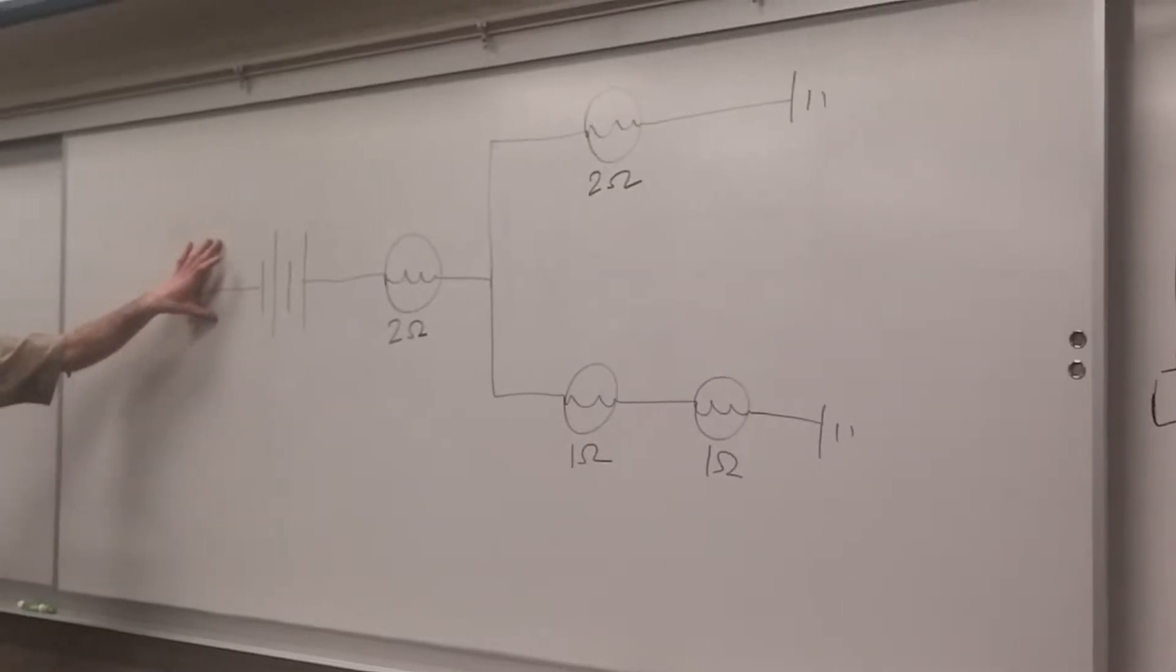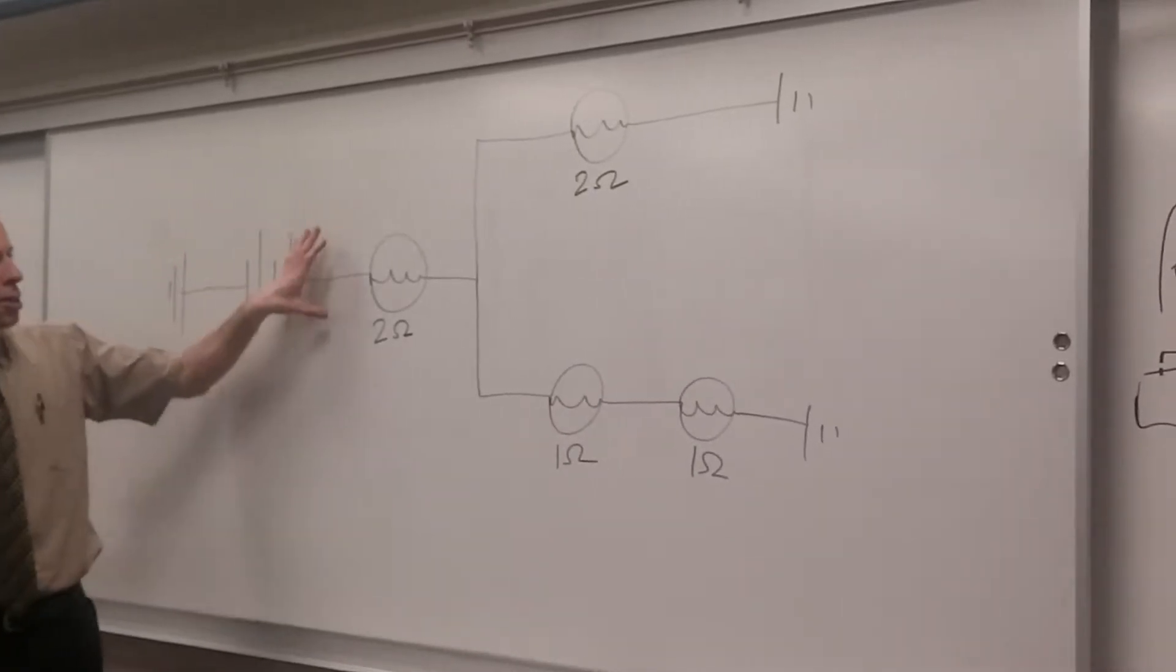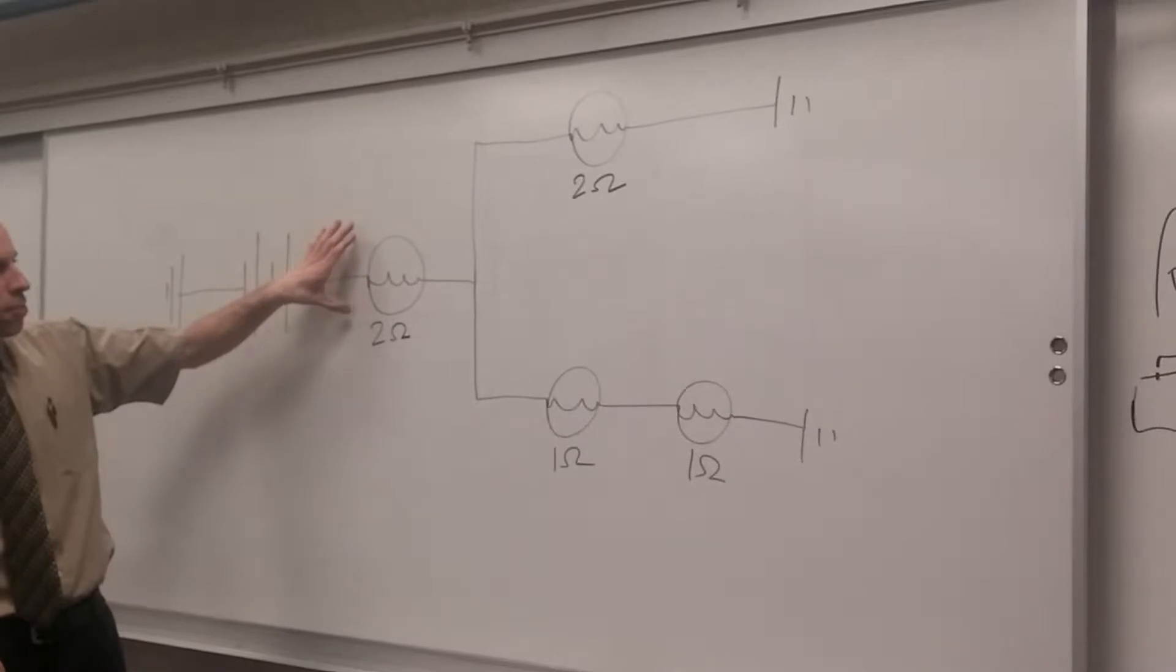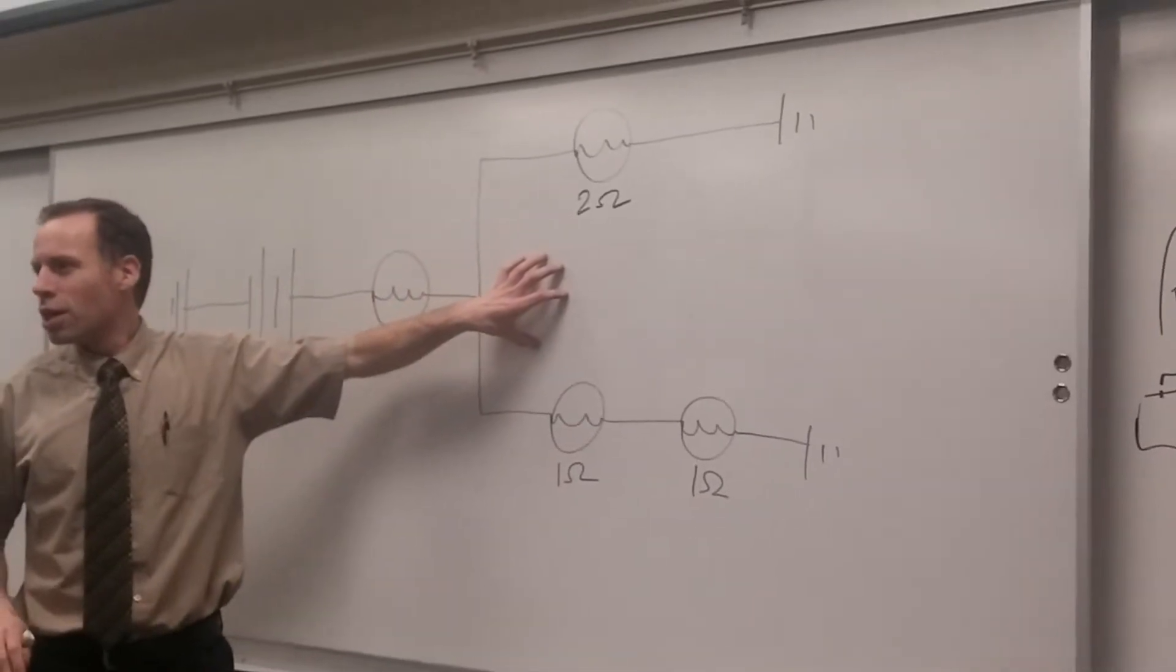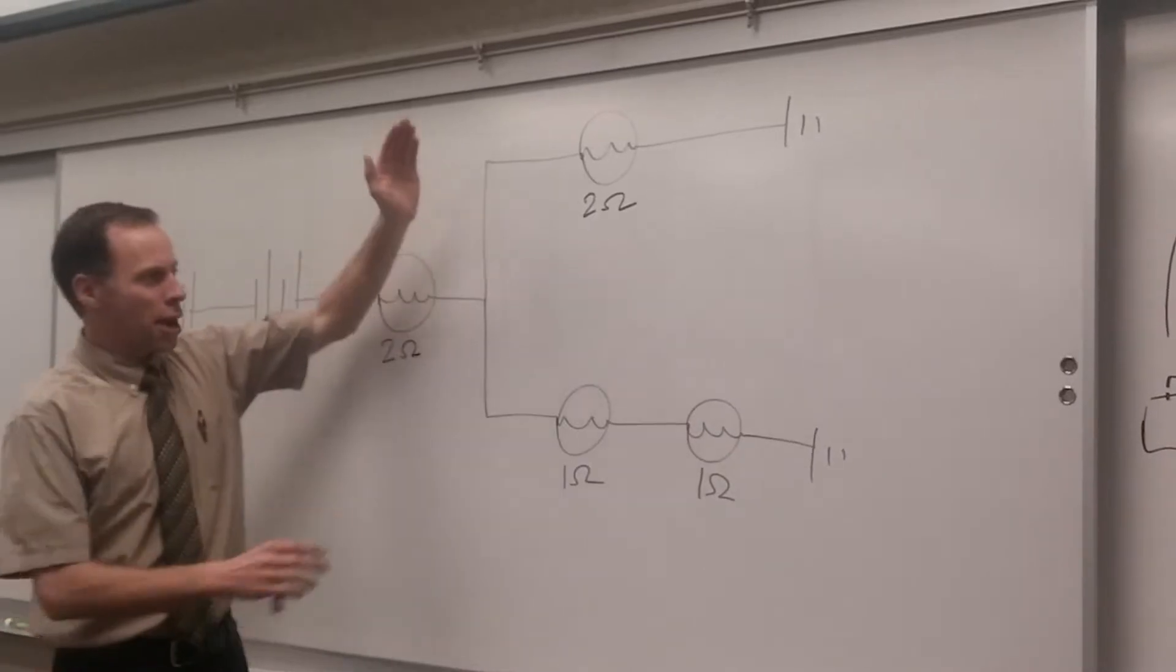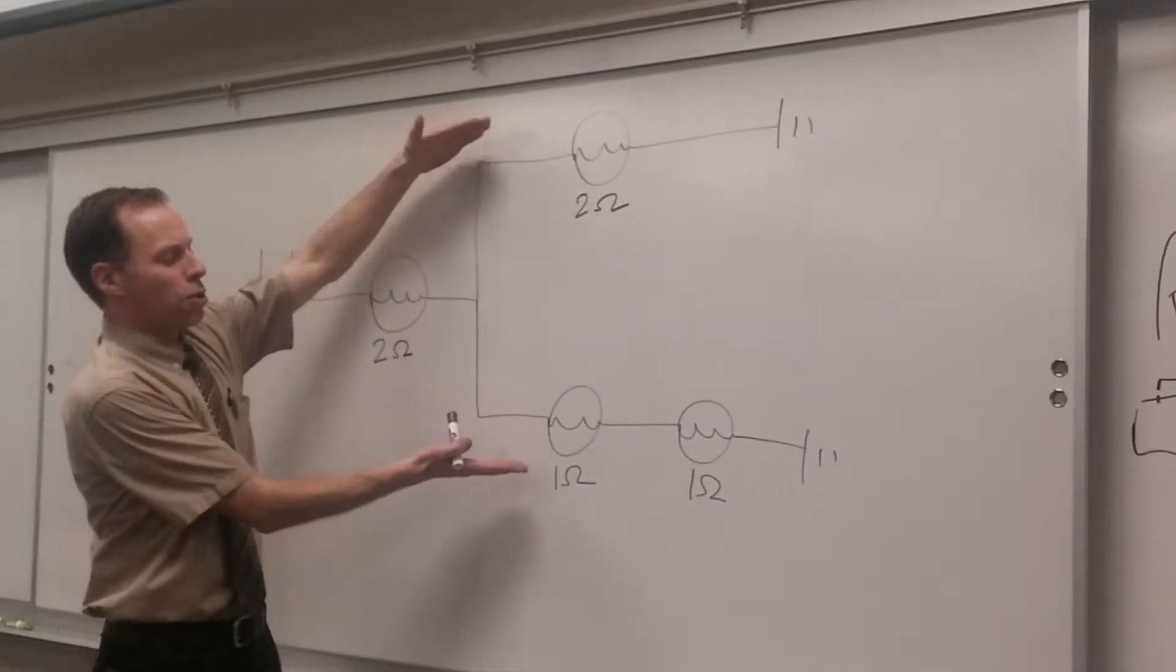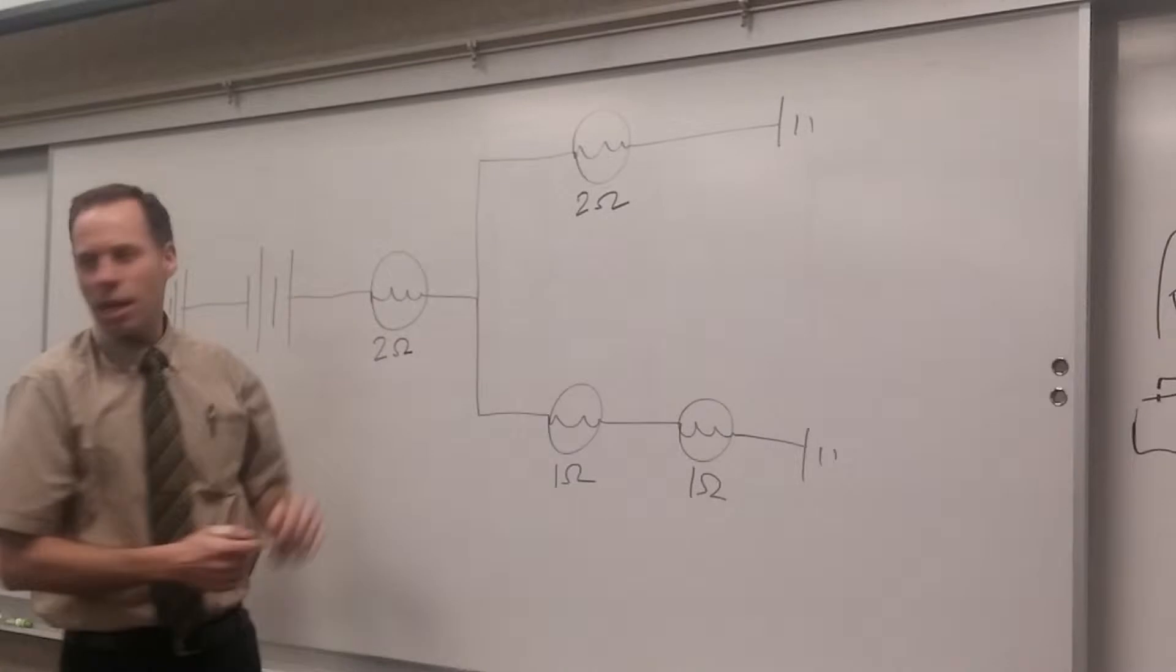As a reminder of how you would do this, you look at a circuit like this as a series portion and a parallel portion. You can't solve it without first knowing what the total resistance of the parallel portion is. Does that make sense?